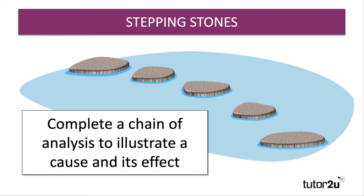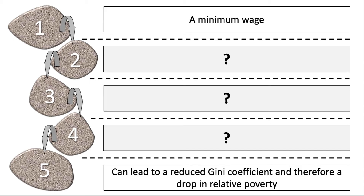Really key in the exam is to build your analysis using chains of reasoning. Examiners are looking for you to complete a chain of analysis to illustrate a cause and its effect. A minimum wage, in theory, can lead to a reduced Gini coefficient and therefore a drop in relative poverty. What a lot of students do is they tend to miss out one or two links in the chain of analytical reasoning, and you can drop marks very easily as a result.